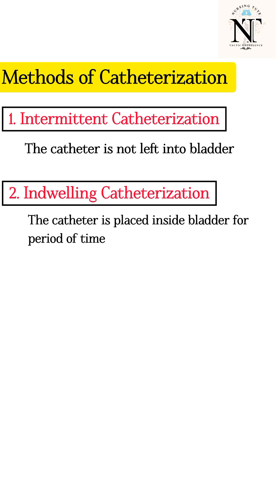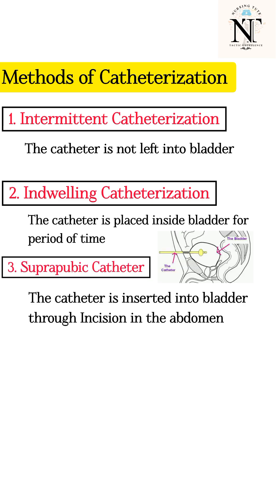The next method is suprapubic. In this type, the catheter is inserted into the bladder through a small incision in the lower abdomen. It is also a type of indwelling catheter.